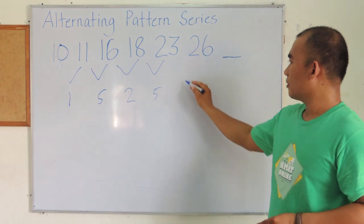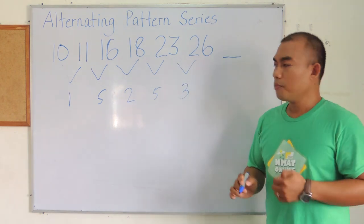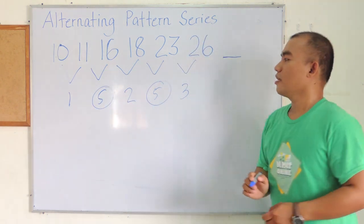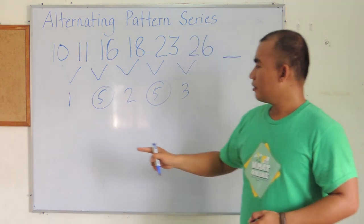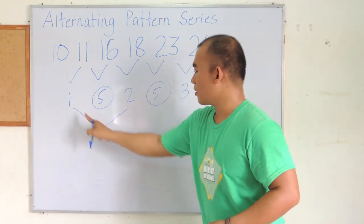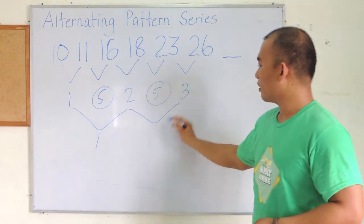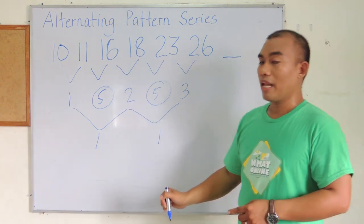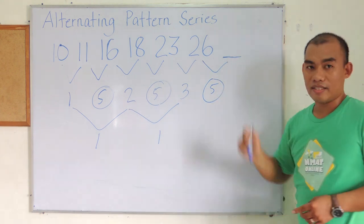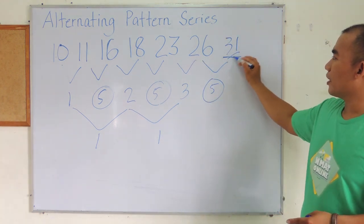From 23 to 26, the difference is 3. Observe that we have 5 recurring as a difference. So the differences are 1, 5, 2, 5, 3 — and there's also a pattern: 1 plus 1 equals 2, 2 plus 1 equals 3. So we apply plus 5 to determine the next number, giving us 26 plus 5 equals 31.